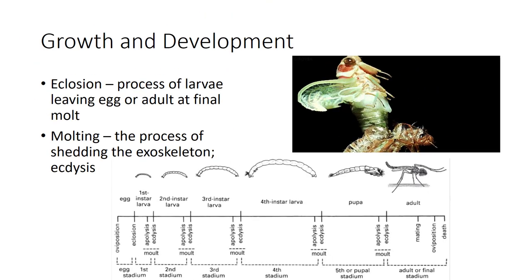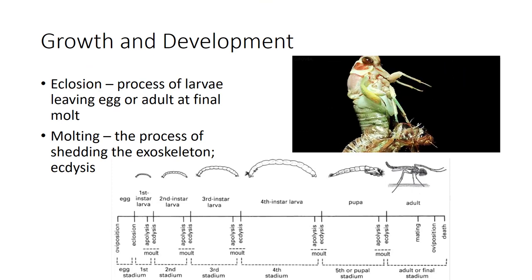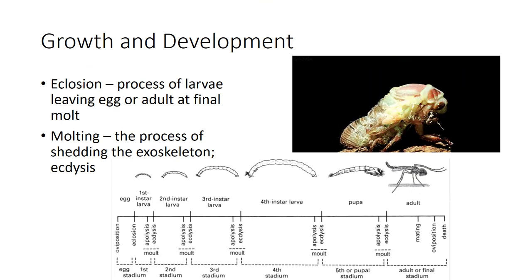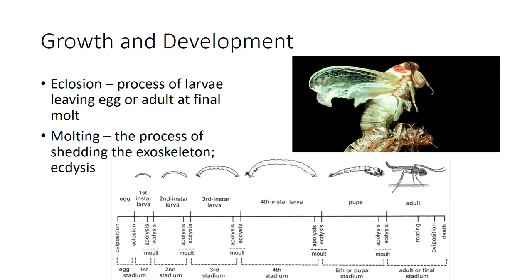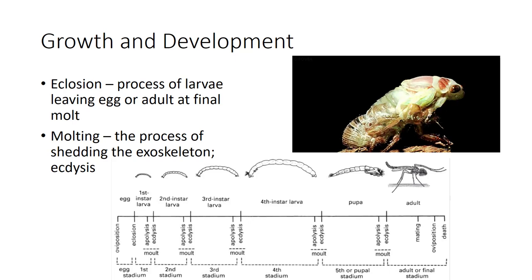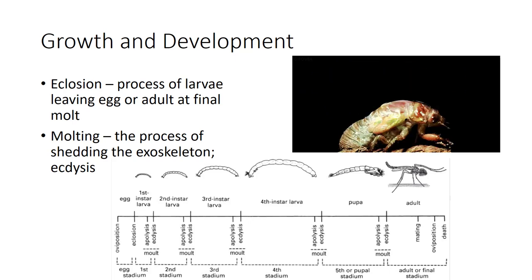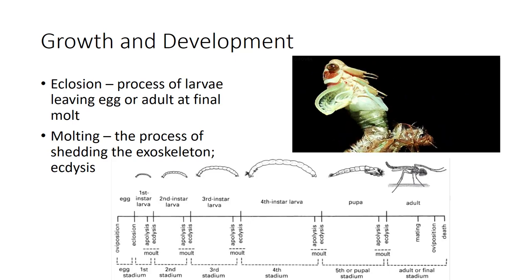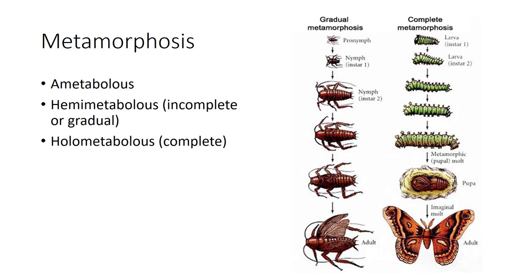In apterygote insects like the silverfish, their growth is indeterminate, so they continue to molt until they die. In most other insects, growth is determinate with a distinctive number of instars. The three types of metamorphosis that different insects go through include ametabolous, hemimetabolous or incomplete metamorphosis, and holometabolous or complete metamorphosis.